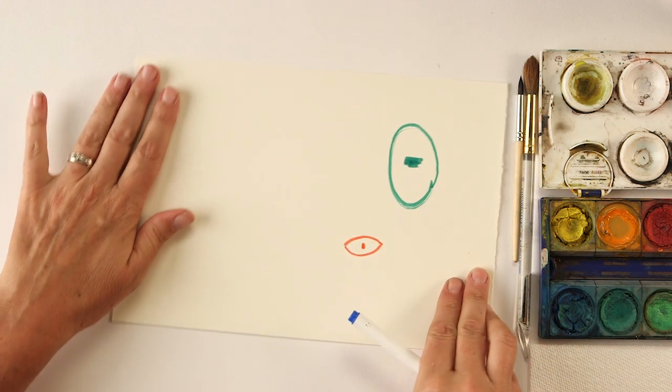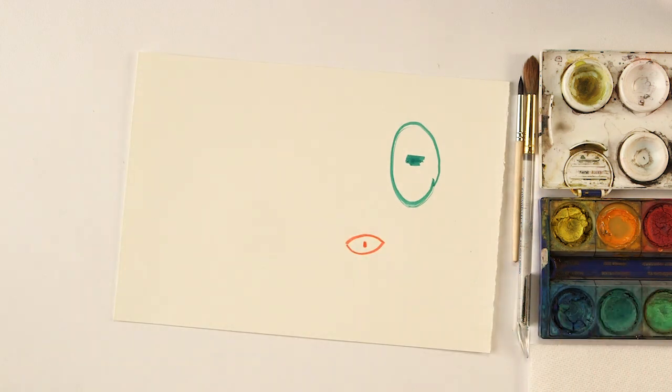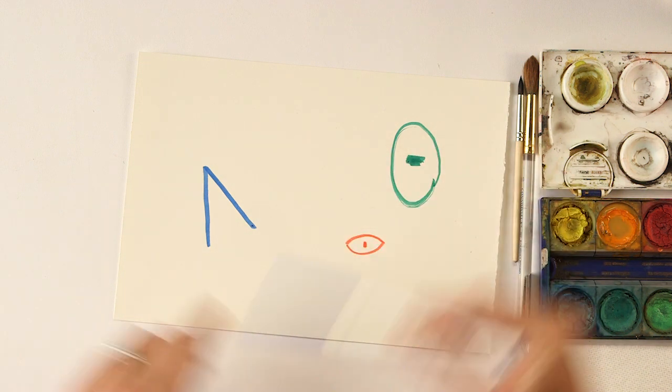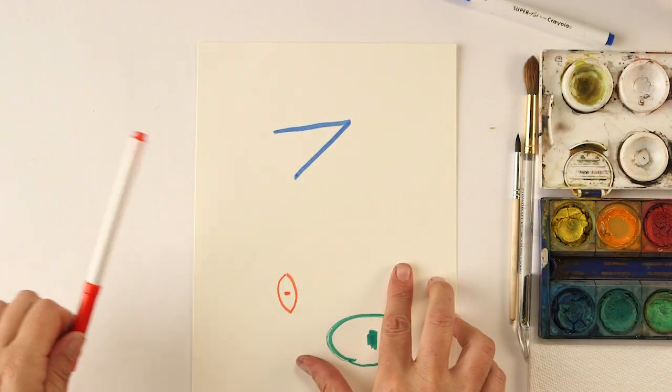Turn your paper 90 degrees clockwise, and draw an ear anywhere on the paper. Cats have kind of pointy ears, don't they? And I keep changing my colors just because I just want to have pretty colors at the end.